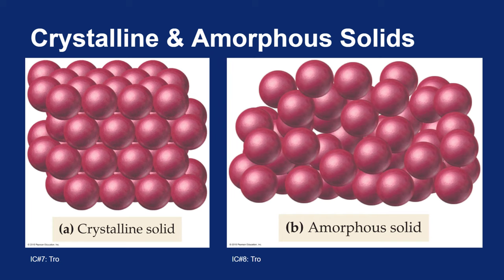Amorphous solids would be things like wax or glass or even natural rubber. Things that when you kind of heat them up a little bit, they almost become fluid in nature where you can shape them and cool them into different shapes.